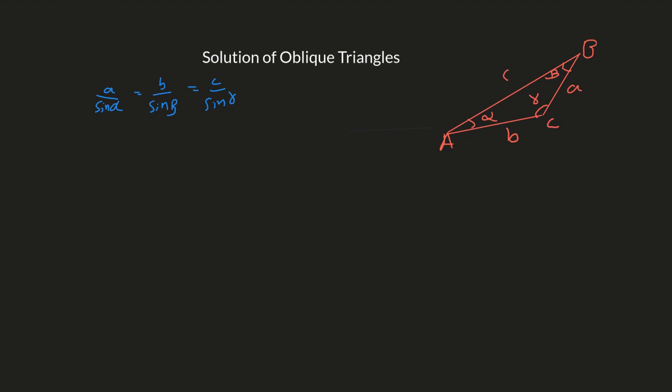Let's take an example. For a triangle, angle beta is 60 degrees, angle gamma is 15 degrees, and b — a side of the triangle — is the square root of 6. In a triangle there are six parts: three sides and three angles. Two angles are given and one side is given.